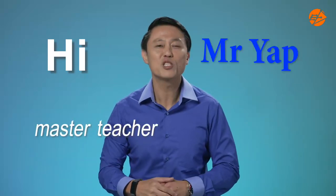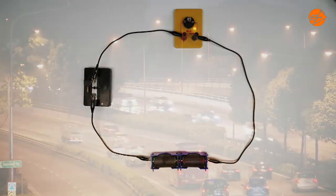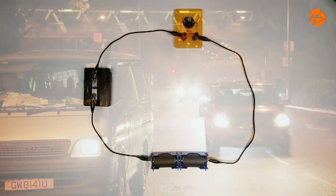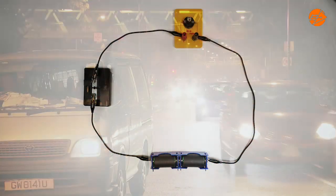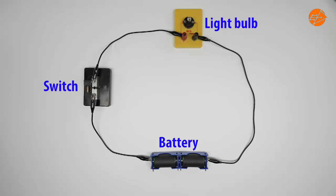Hi, it's me again, Mr. Yuck, Master Teacher for Physics. What's in a car is pretty complicated. So to simplify things, we can use a simple electric circuit with a battery, a light bulb, a switch, and connecting wires to analyse the scenario.